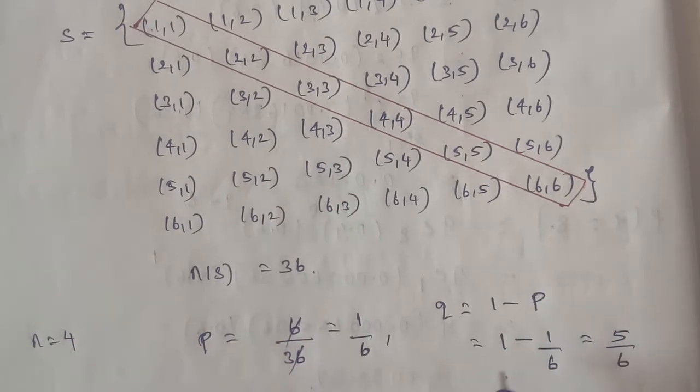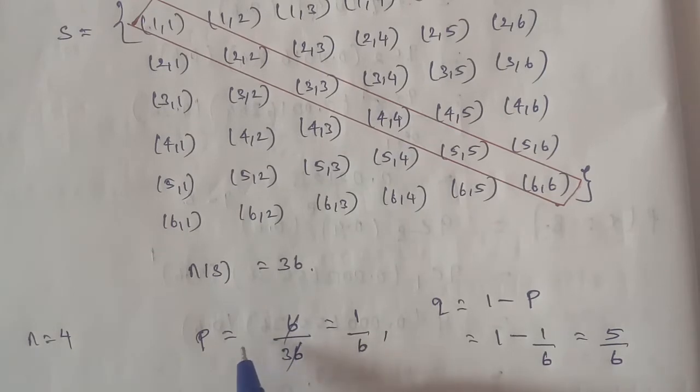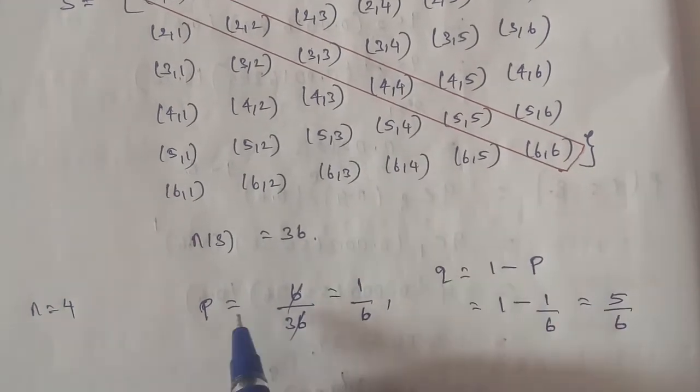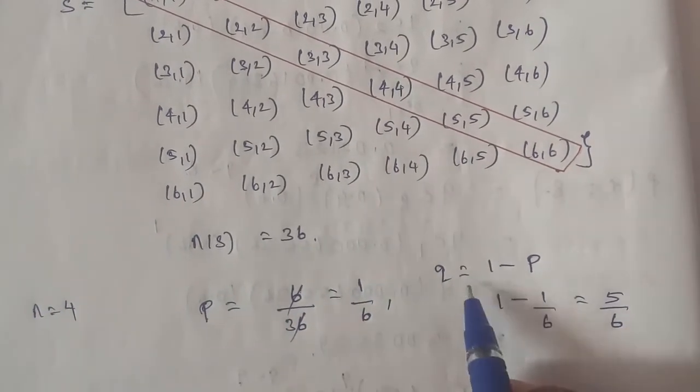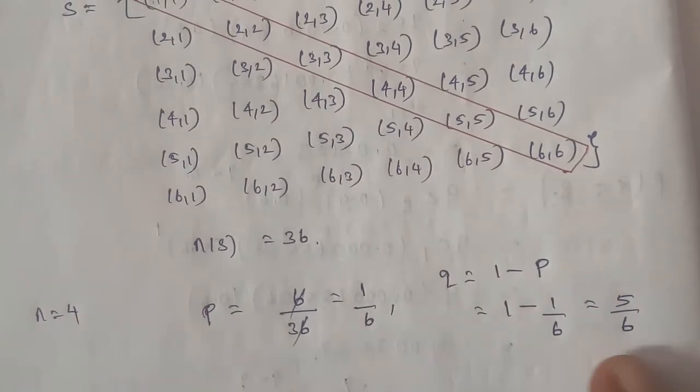P is the doublet probability, Q is 5 by 6. If you add the probabilities, P plus Q, P is 1 by 6, Q is 5 by 6, equals 6 by 6 is equal to 1. So the data is correct.